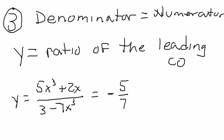So your horizontal asymptote would be y equals negative 5 over 7. The most common ones are where the powers are equal to each other.